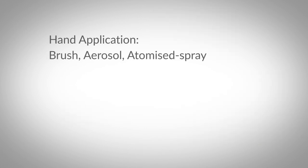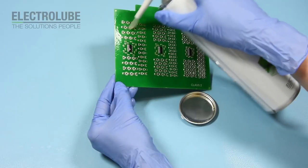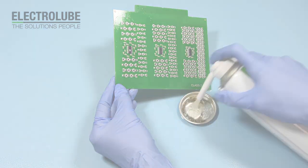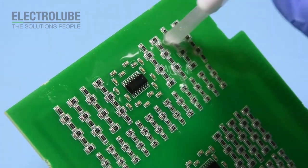Hand coating via brush, aerosol or atomized spray gun, or automated dip coating and selective coating machine. To avoid outside contaminants in any application method, we would usually advise cleaning the PCB before coating and ensuring your workspace is clean and well ventilated.